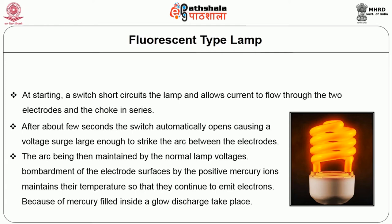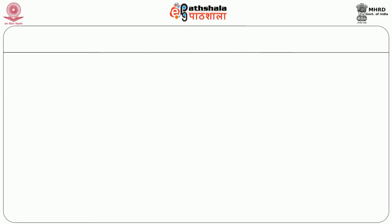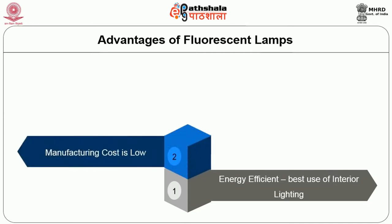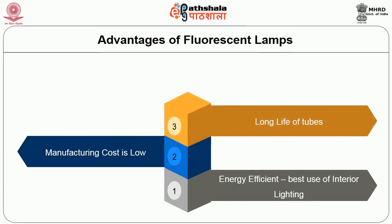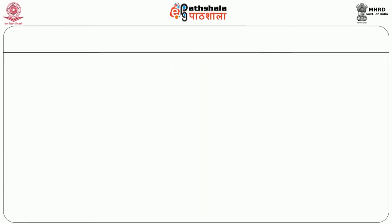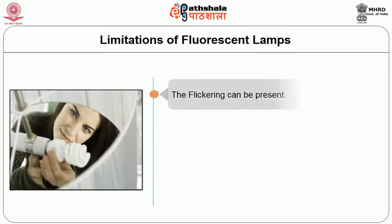Because mercury is filled inside, a glow discharge takes place. Advantages of fluorescent lamp: energy efficient, best use for interior lighting, manufacturing cost is low, long life of tube, good selection of desired color temperature. Limitations: flickering can be present, power factor is very low, poorly designed ballast can create fires when they overheat.